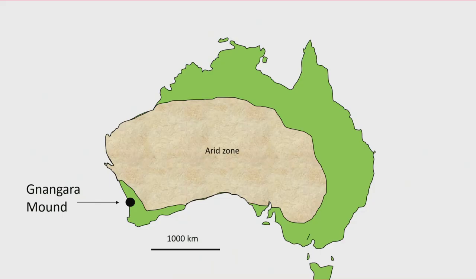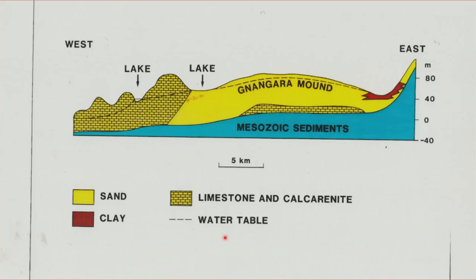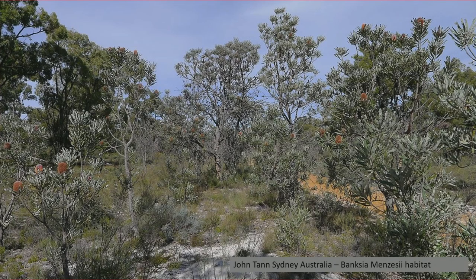Coming south to the Nangarra Mound, just north of Perth — it's Perth's main water resource. The Nangarra Mound is coastal plain sediments of about 70 metres thick of sand in a mound shape. It receives direct recharge from rainfall. Groundwater moves westwards to discharge at the ocean, and it supports lakes, wetlands, and a banksia woodland over the sandy soils. Some of these trees have been shown to be phreatophytic because they've died in the cone of depression of pumping bores.